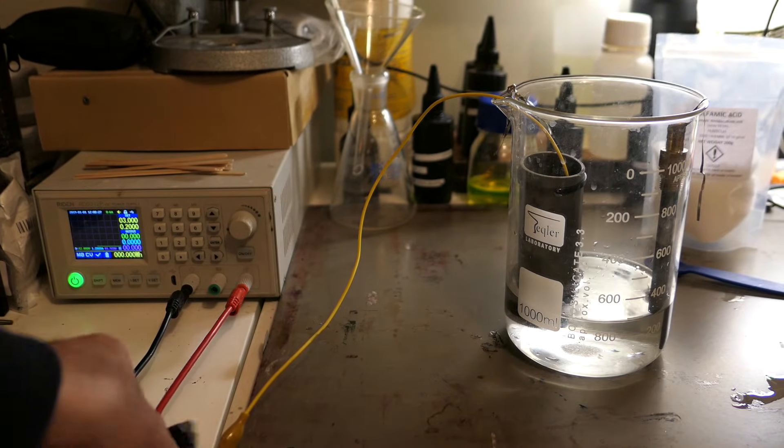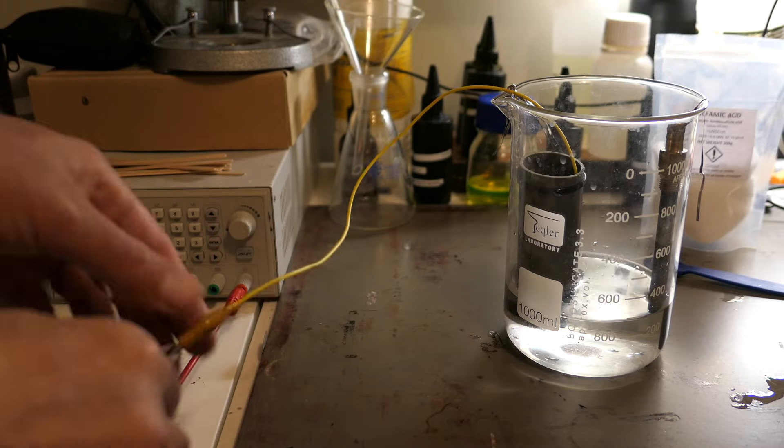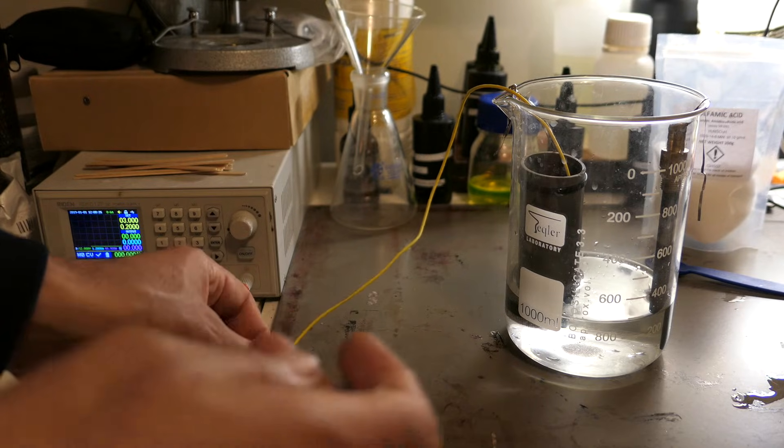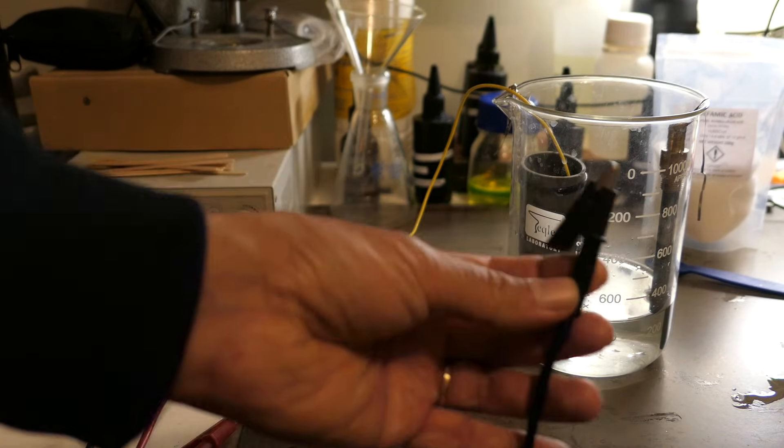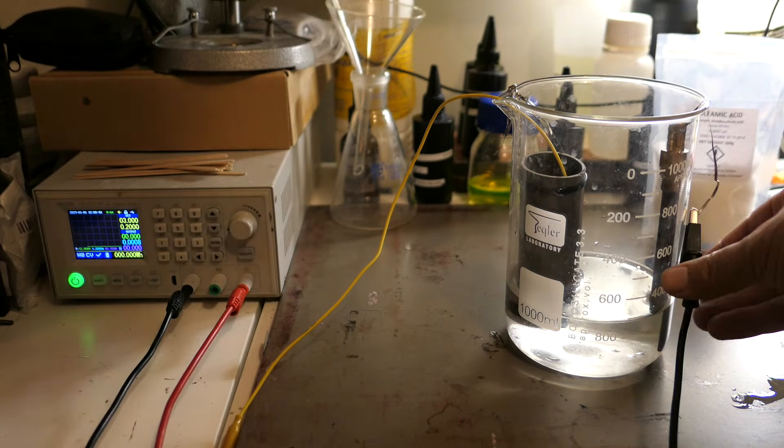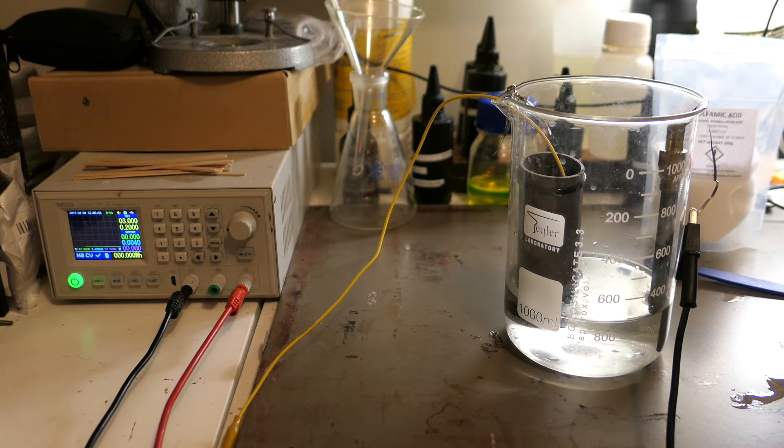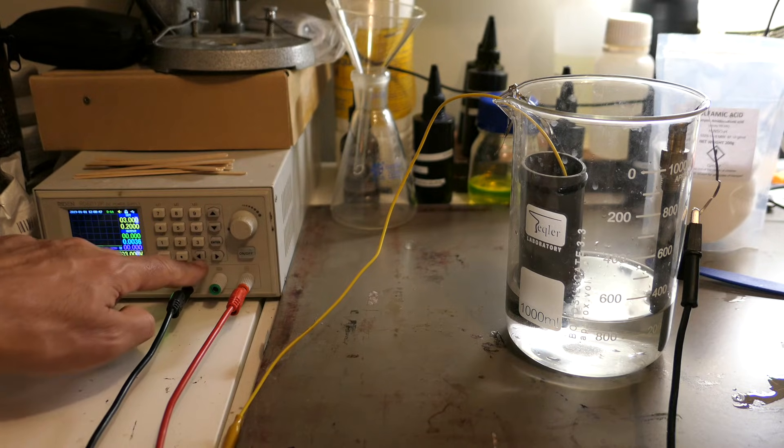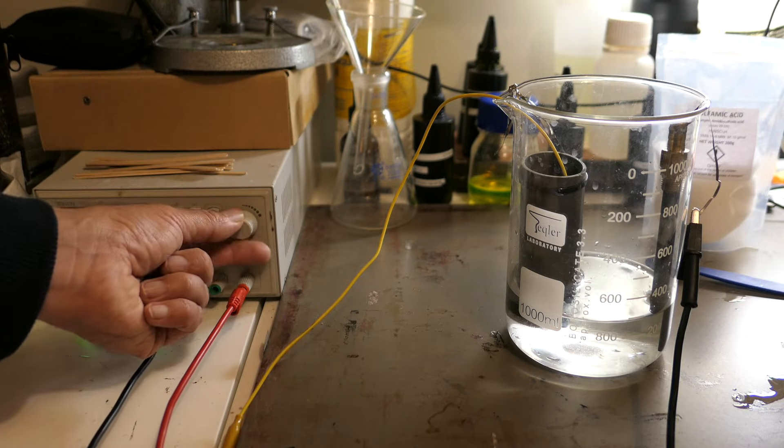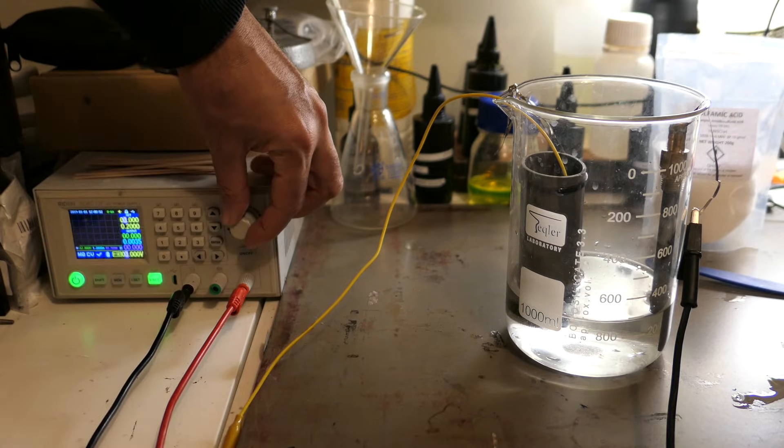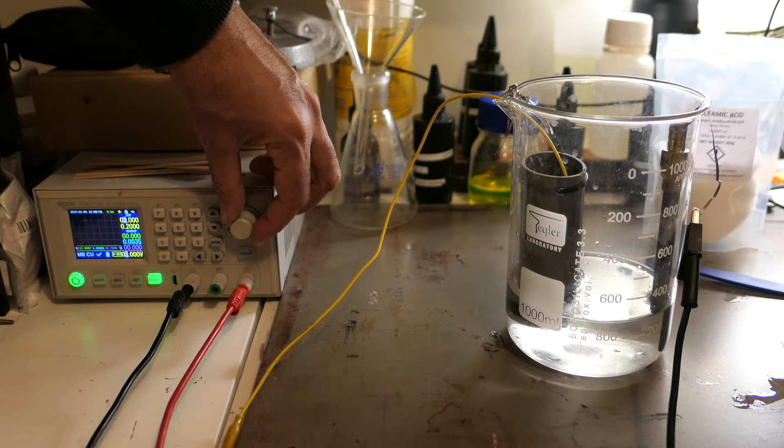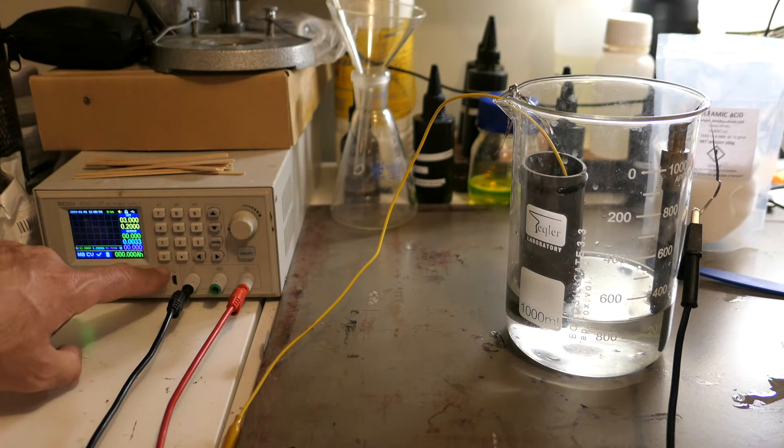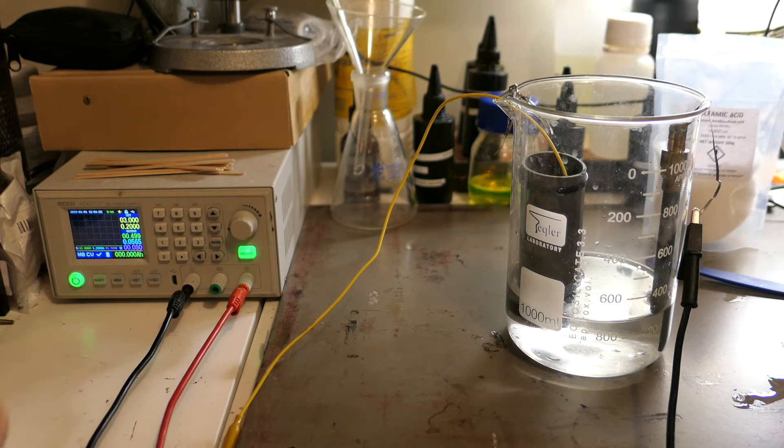For the cathode, we're using a simple graphite bar. Graphite is a great choice for this process because it's inert, meaning it won't react with the electrolyte or the silver we're refining. I've also set my power supply to 3 volts, which is a safe and effective voltage for silver refining. I have limited the current as well, to avoid any issues like a short circuit that could cause problems during the process. Keeping the current under control ensures that the electrolysis runs smoothly without overheating or damaging the equipment.